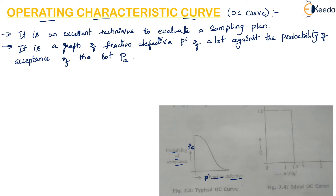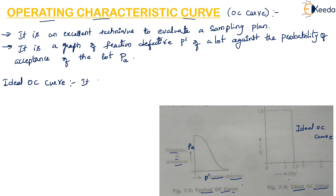Here there is a typical OC curve and also an ideal OC curve shown in the diagram. An ideal OC curve can be drawn only for 100% inspection — it is not meant for sampling plans or sampling inspection.